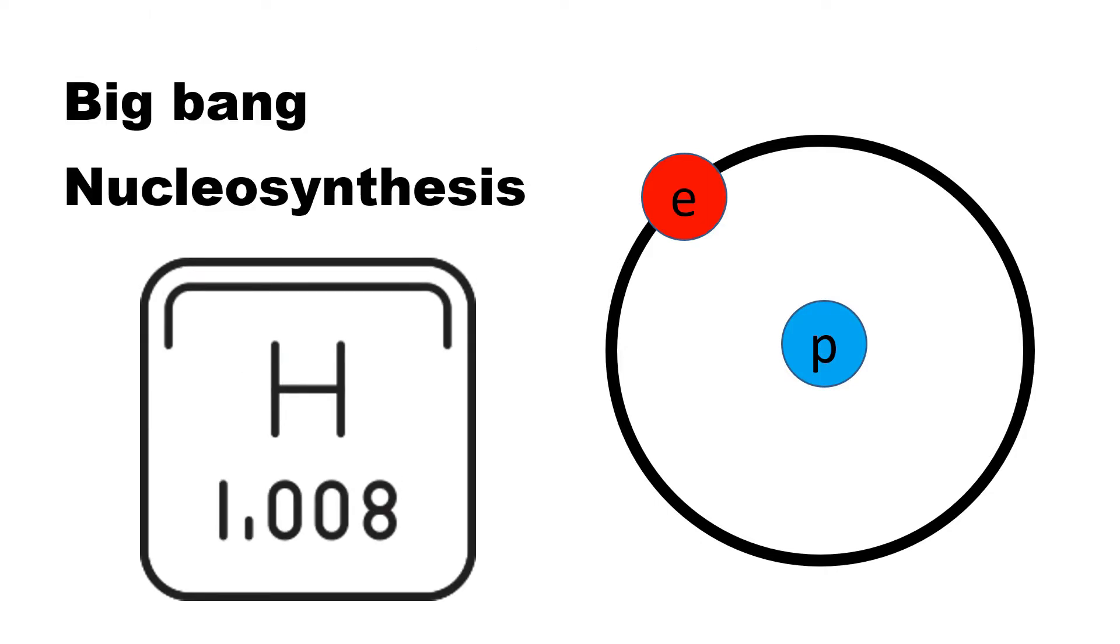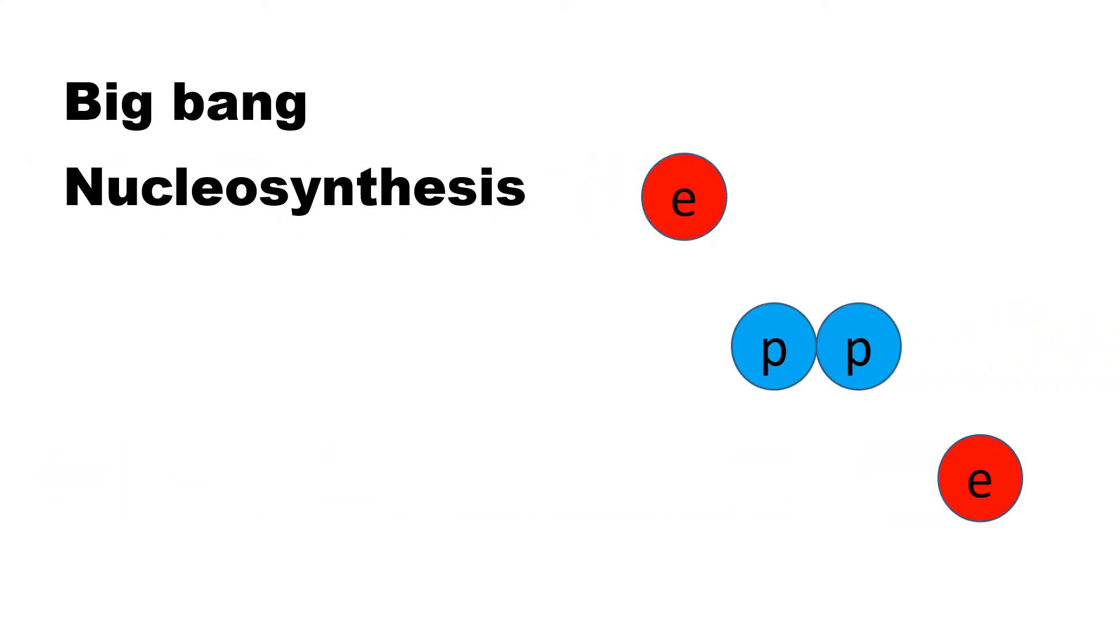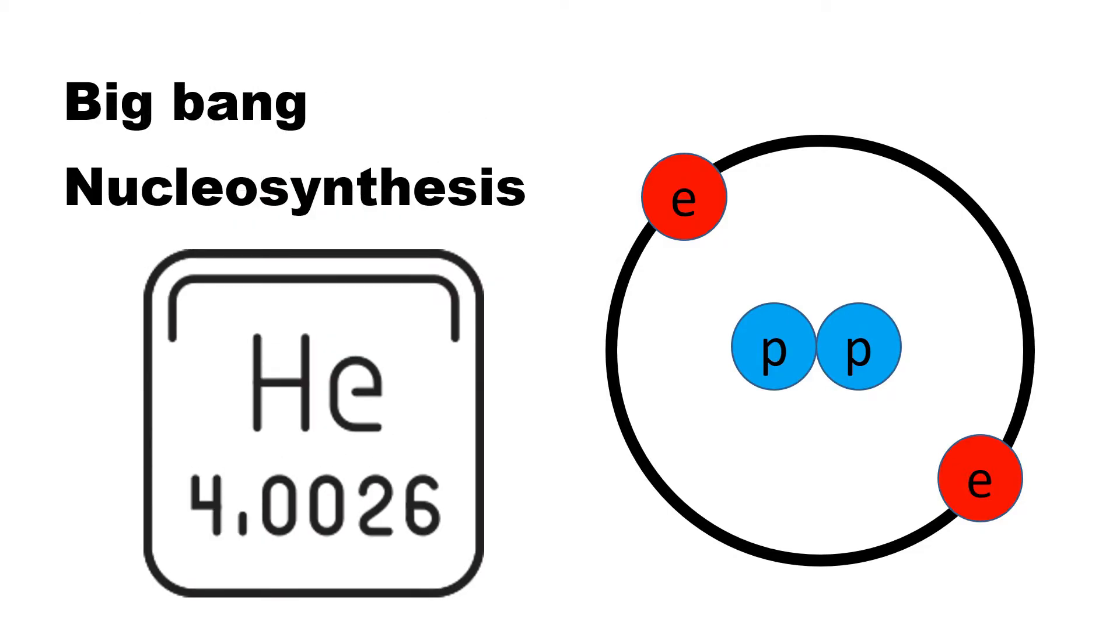And this was the first type of nuclear synthesis, the Big Bang nuclear synthesis. Remember, we had two elements as evidence for the Big Bang, and as hydrogen grew, the element helium began to form.